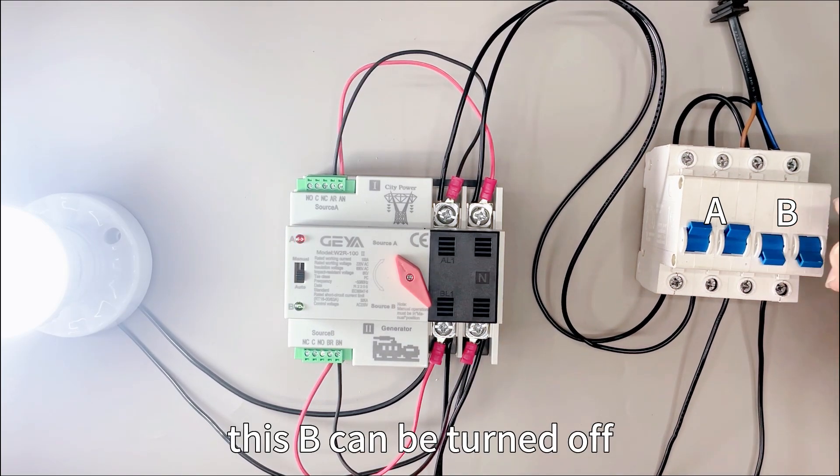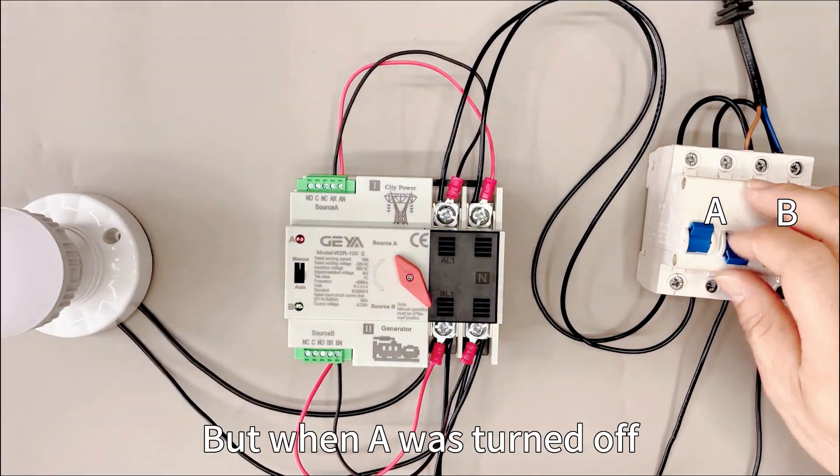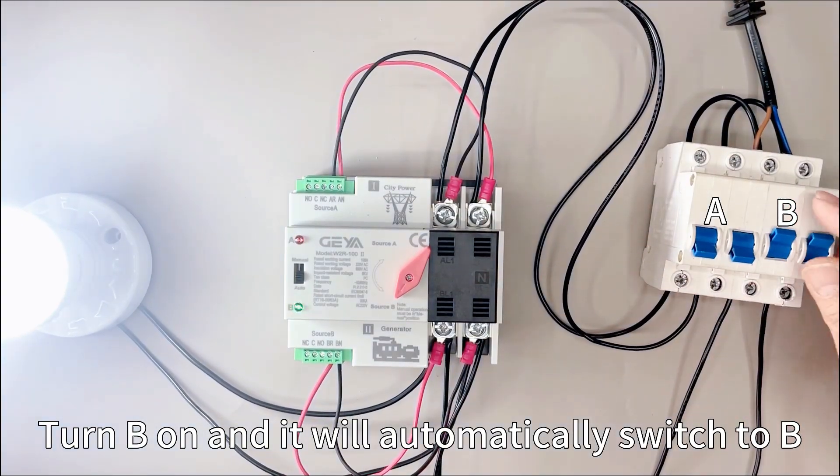This B can be turned off. But when A is turned off, turn B on, and it will automatically switch to B.